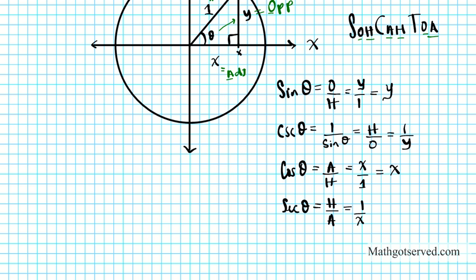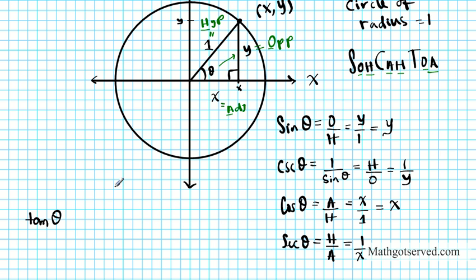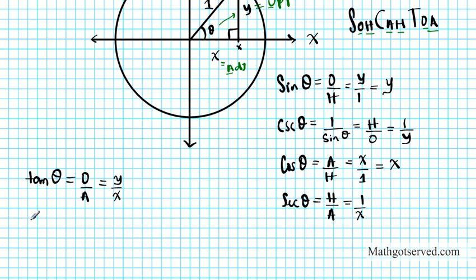Now let's do tan. Using TOA: tangent theta is opposite over adjacent. The opposite is y and the adjacent is x, so tan theta equals y over x. And cotangent theta is the reciprocal of tangent — adjacent over opposite — which equals x over y.